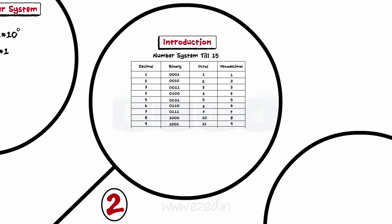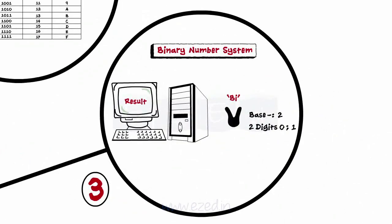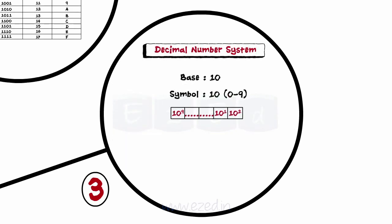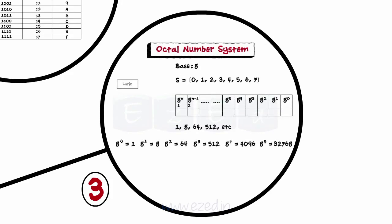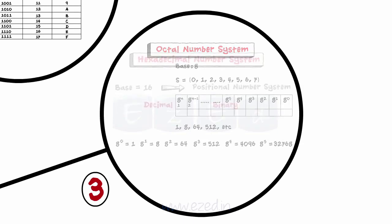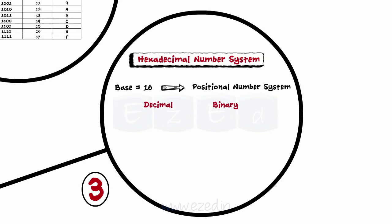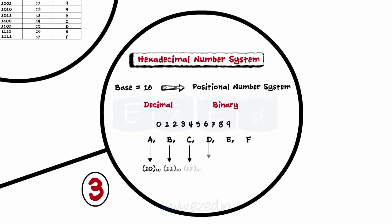Binary number system has base 2 and only two symbols: 0 and 1. Each position represents a power of base 2. The decimal number system has base 10 and 10 symbols from 0 to 9; each position represents a power of base 10. The octal number system has base 8 and 8 symbols from 0 to 7; each position represents a power of base 8. The hexadecimal number system has base 16 and 16 symbols: 0 to 9, with values 10 to 15 represented by the alphabets A to F. Each position represents a power of base 16.